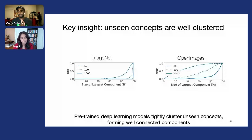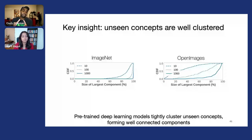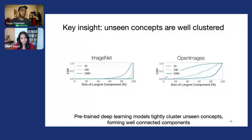Of course, there are edge cases where things are ambiguous. For example, in Open Images there's a class called 'electric glue' that can appear in many different contexts and is spread over the entire space. But for things that are visually obvious and well-captured by the representation, they're actually very well clustered.